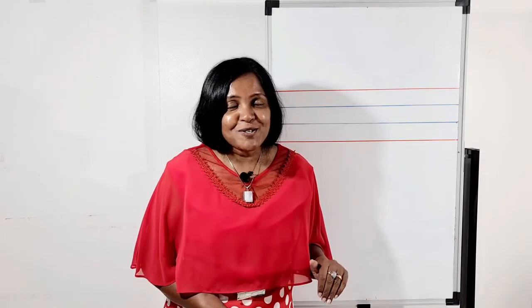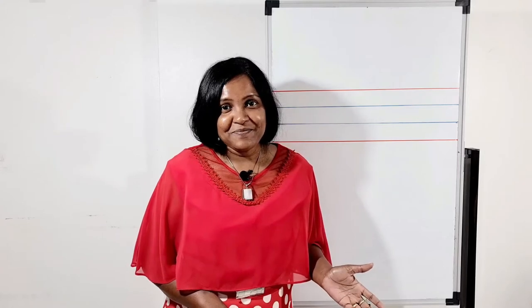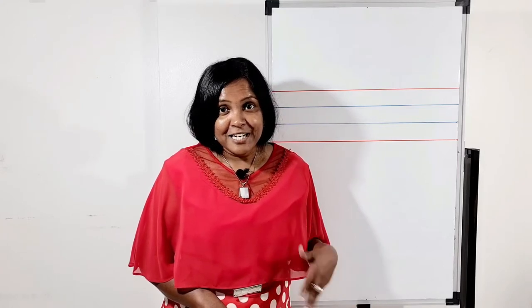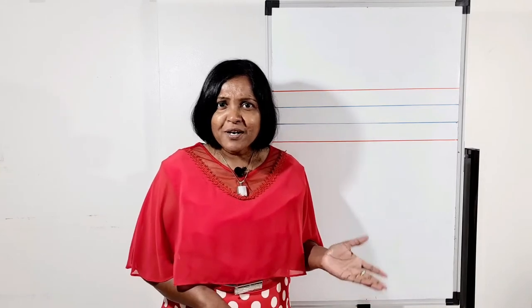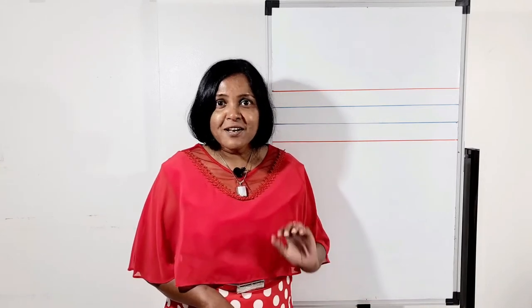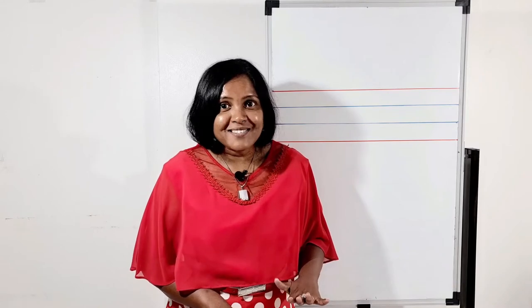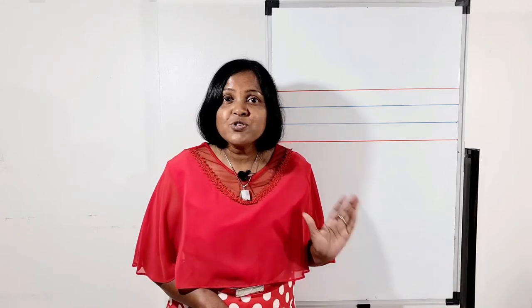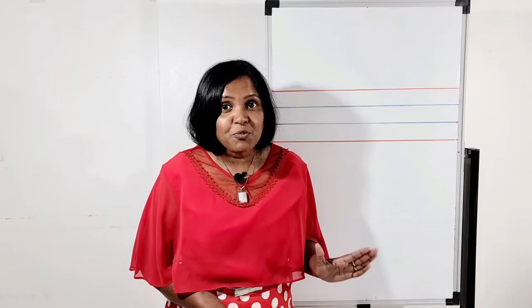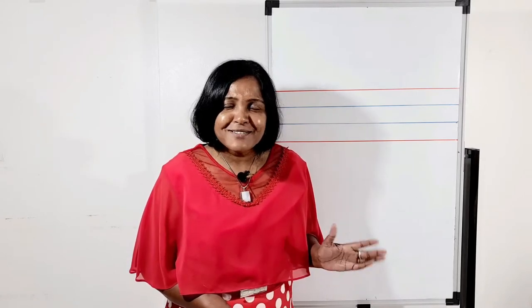Today we are going to learn letter J. Letter J is a consonant. As we all know, there are two types of letters: uppercase and lowercase. First I am going to introduce how to write letter J on the board. Look at the board. Listen carefully.